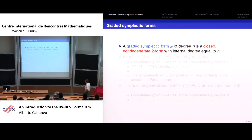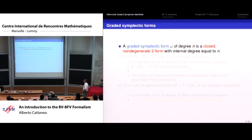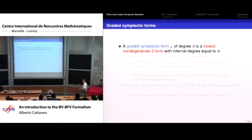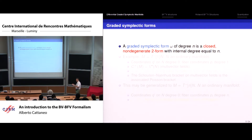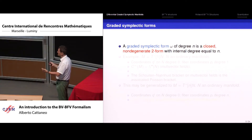The next and last ingredient I want to introduce is the notion of a graded symplectic form. Formally this is the same as a symplectic form on ordinary manifolds, but you keep track of degree. A graded symplectic form omega of degree N is a closed non-degenerate two-form with internal degree equal to N. We have two degrees: the form degree and the Z-grading of the supermanifold. Closed means you can define differential forms on supermanifolds and the de Rham differential purely algebraically. Non-degeneracy means the two-form establishes an isomorphism between tangent and cotangent bundle.